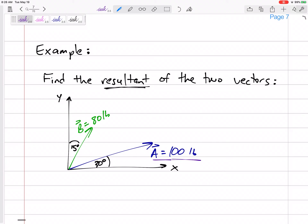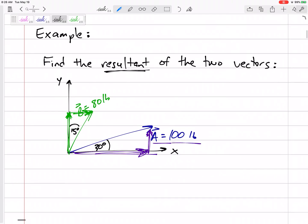We need to break this 100 into its two components, its x component and its y component. We need to break this 80 into its two components, its y component and its x component. Then we can add these two x components together and add these two y components together to get the resultant.